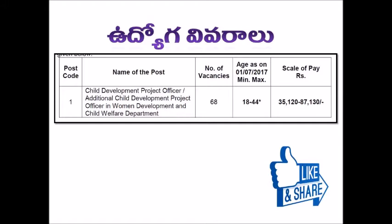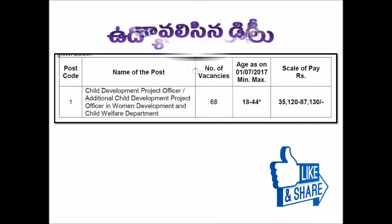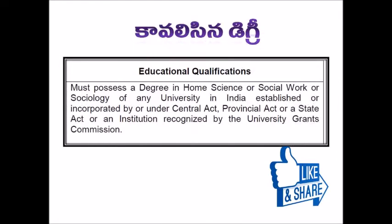The total number of posts are 68, age is from 18 to 44, and pay scale is from 35,120 to 87,130. The qualification required is a Degree in Home Sciences, Social Work, or Sociology from any University of India.